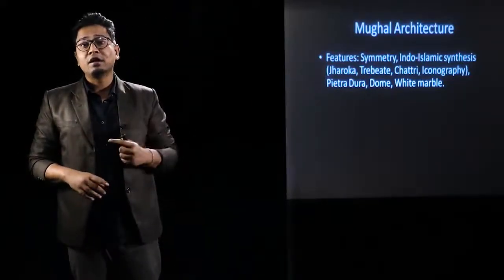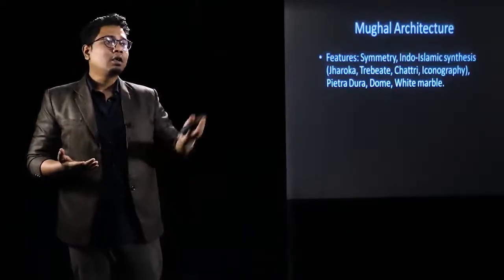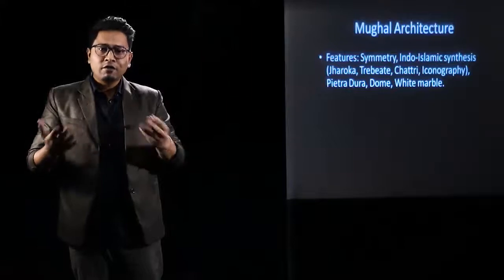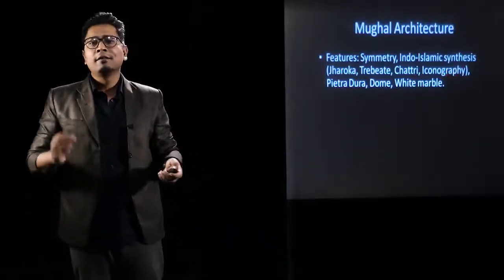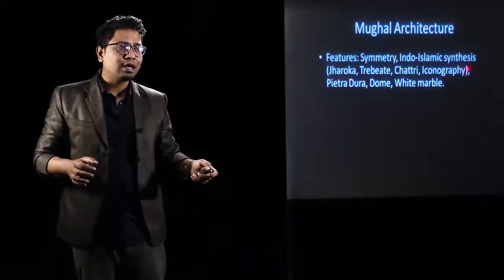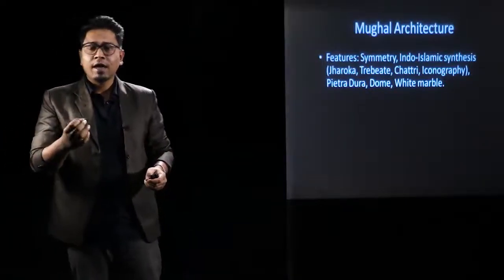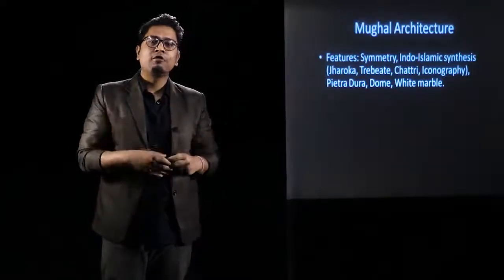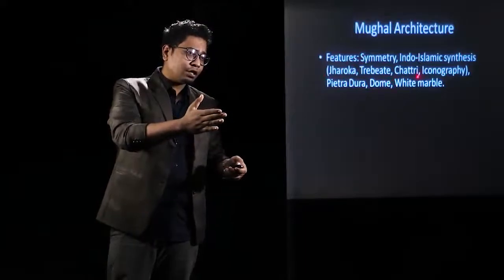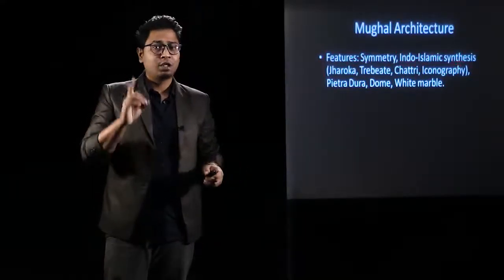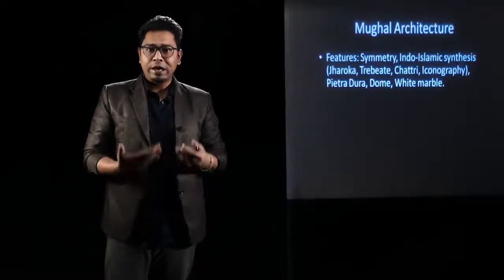Another feature is trabeate architecture — pillar and lintel construction — visible in the Diwan-i-Aam. Chatri are kiosk-like structures seen on the facade of the Red Fort, placed diagonally on both sides. Iconography, including anthropomorphic designs depicting humans and animals, is also a feature — this goes against Islamic tradition and results from Indo-Islamic synthesis. Features like jharoka, trabeate construction, chatri, and anthropomorphic iconography are all products of the Indo-Islamic synthesis that defines Mughal architecture.